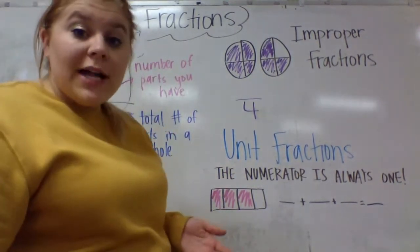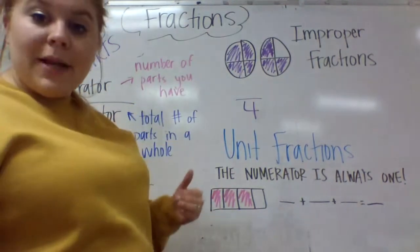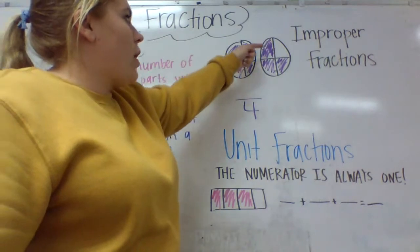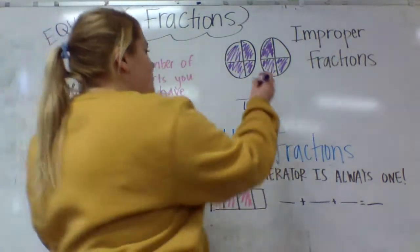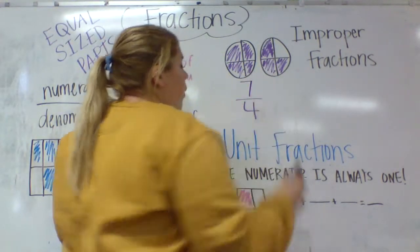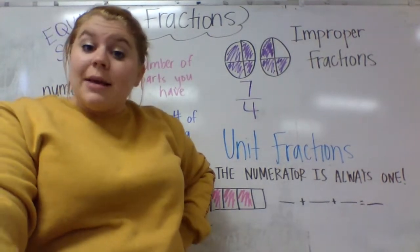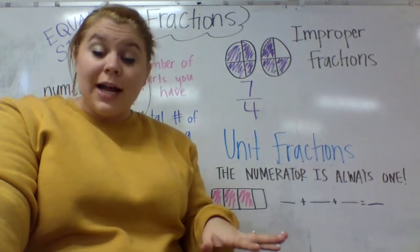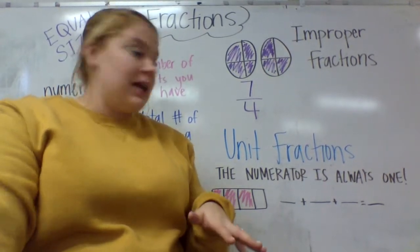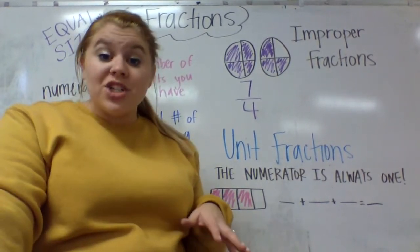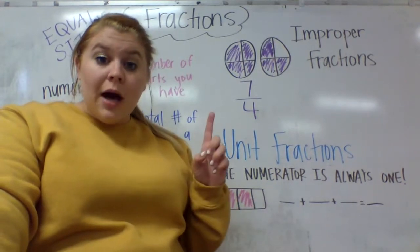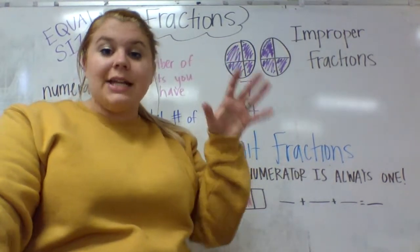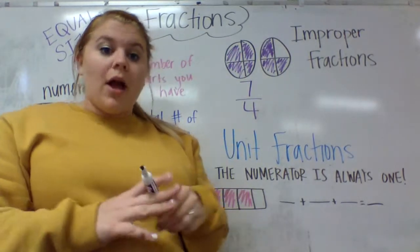Now for my numerator, I need to count how many pieces of pizza do I have: 1, 2, 3, 4, 5, 6, 7. So 7 fourths is the fraction I'm looking at. That's improper — my number on top should not be bigger than my number on bottom. But for right now, we're going to have to just accept that it is. Improper fractions happen when our number up top is bigger than our number on the bottom — we have more pieces shaded than the number of pieces it takes to make a whole.